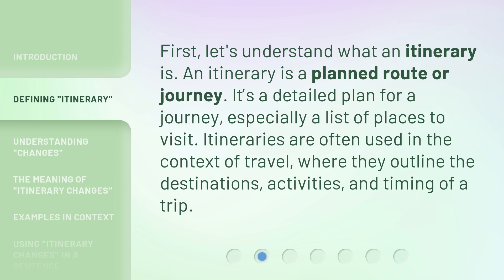First, let's understand what an itinerary is. An itinerary is a planned route or journey. It's a detailed plan for a journey, especially a list of places to visit. Itineraries are often used in the context of travel, where they outline the destinations, activities, and timing of a trip.